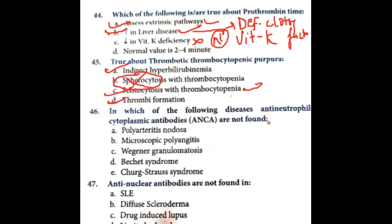In which of the following diseases are anti-neutrophilic cytoplasmic antibodies (ANCA) not found? ANCA are not found in polyarteritis nodosa.